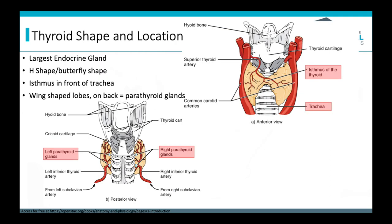The shape is described as either H-shaped or butterfly-shaped. On the right you have the right lobe, on the left you have the left lobe, and in between you have the isthmus connecting the two lobes. The isthmus is located in front of the trachea — you can see it sitting right on top of the trachea from the anterior view.